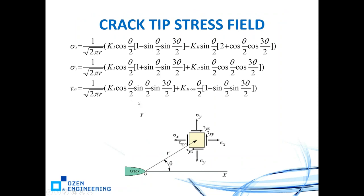Later, back in the late 1950s, Williams developed the crack tip stress field in 1959. From the 1920s to 1959 — almost 40 years — there was no mathematical development. The Williams solution found the relationship between stress and the stress intensity factor K sub 1. The square root relationship appears in this formulation done in 1959.